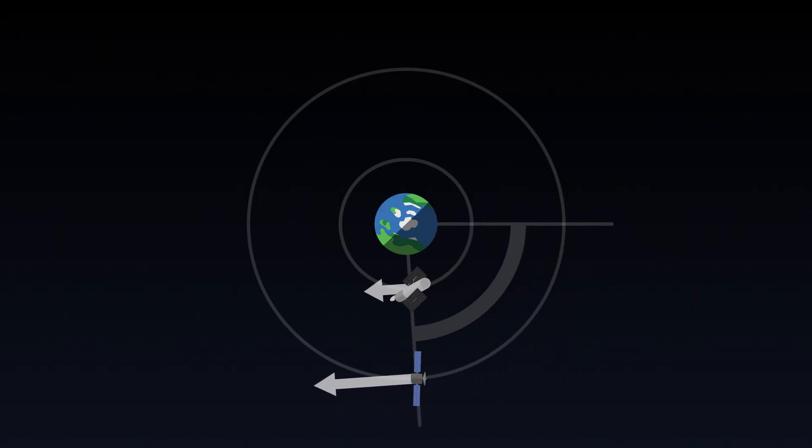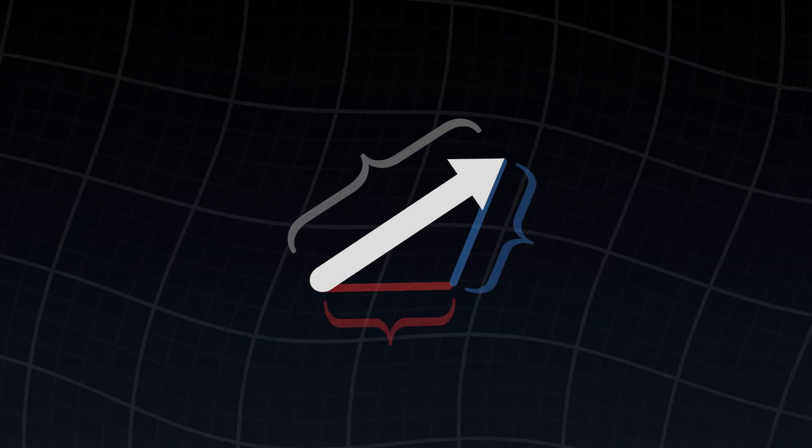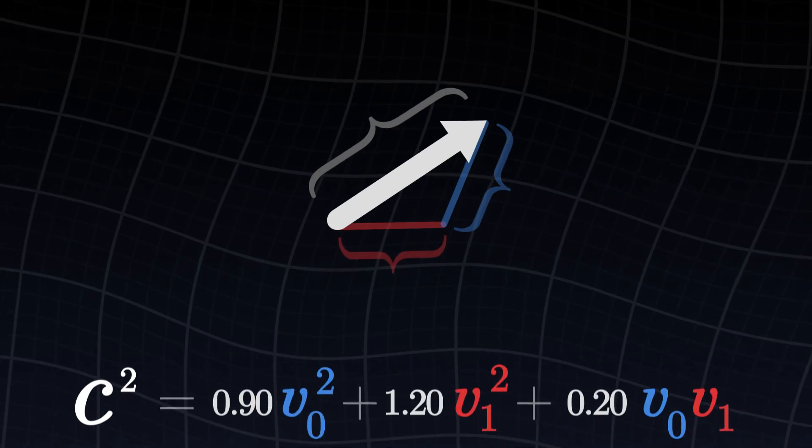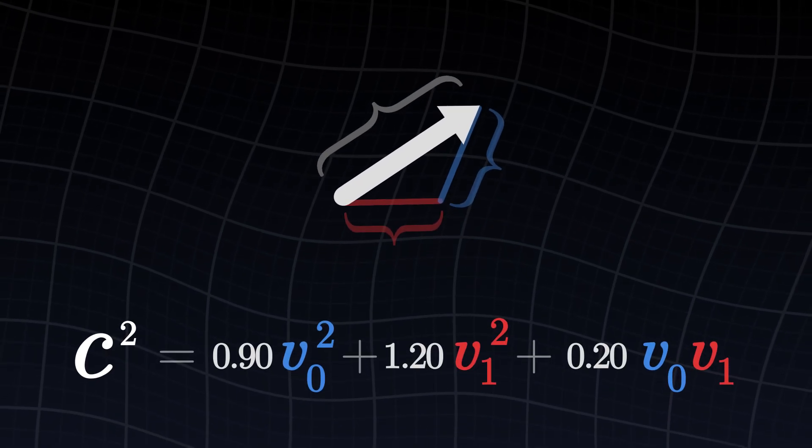In the next videos, we will see how to solve this problem, how to get a real measure of physical distances and speed from components. Building a new version of the Pythagorean theorem, more general, which works in spacetime regardless of which grid we use.